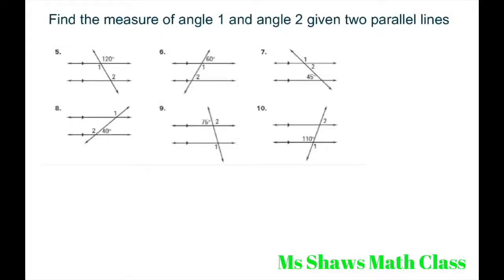Hi everyone. We're going to find the measure of angle 1 and 2 in six different examples. We have a transversal here – these lines that intersect two parallel lines. We know they're parallel because they have these little arrow ticker marks right here. Anytime you see these little arrows, that means they're parallel.